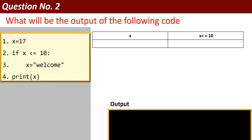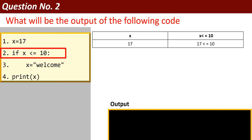Now this is program number 2. What will be the output of the following code? Here x equals 17, and if x is less than or equal to 10, x equals 'welcome', otherwise it will print x. The value of x is 17. It will check: is 17 less than or equal to 10? This condition is false.